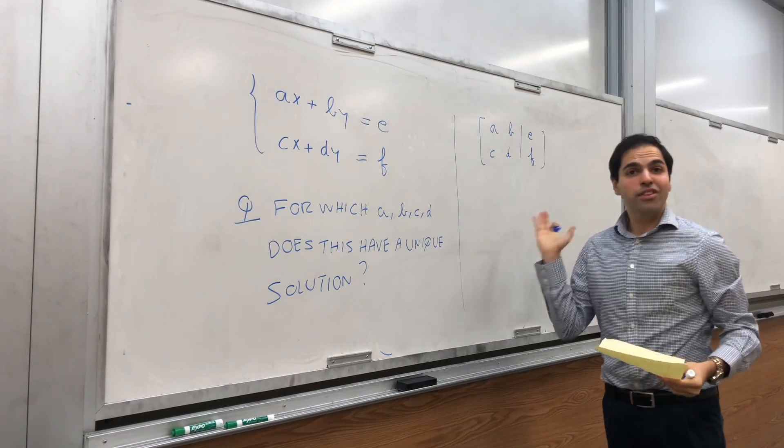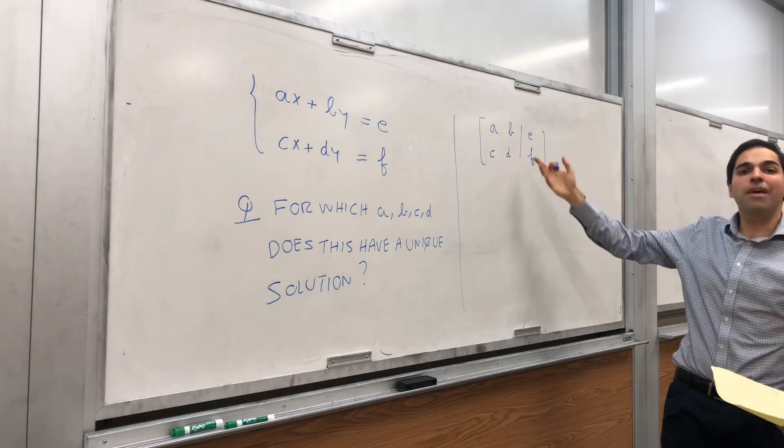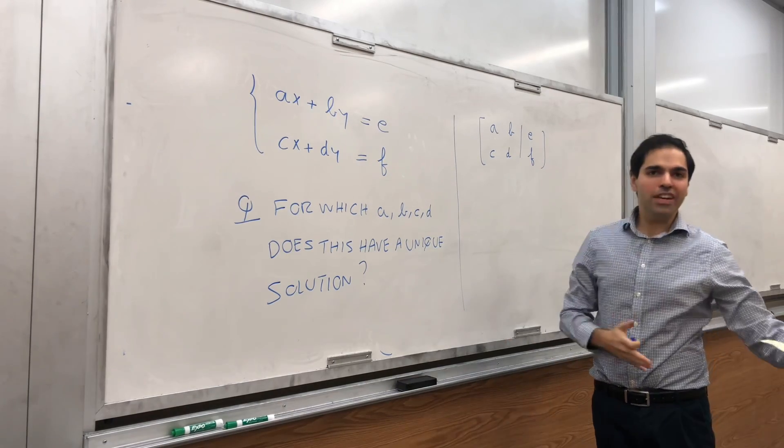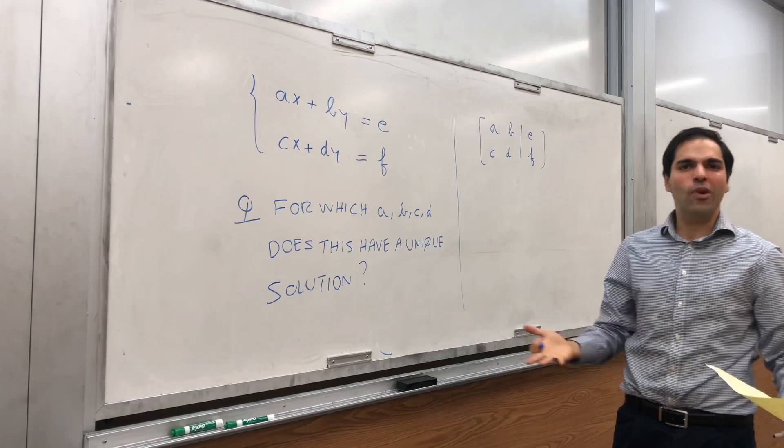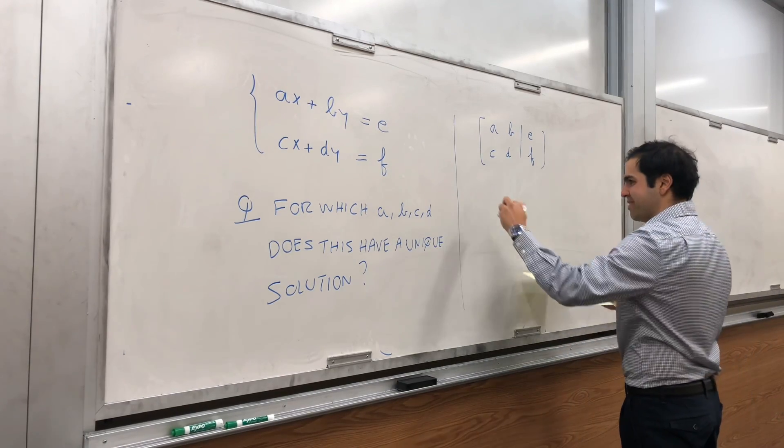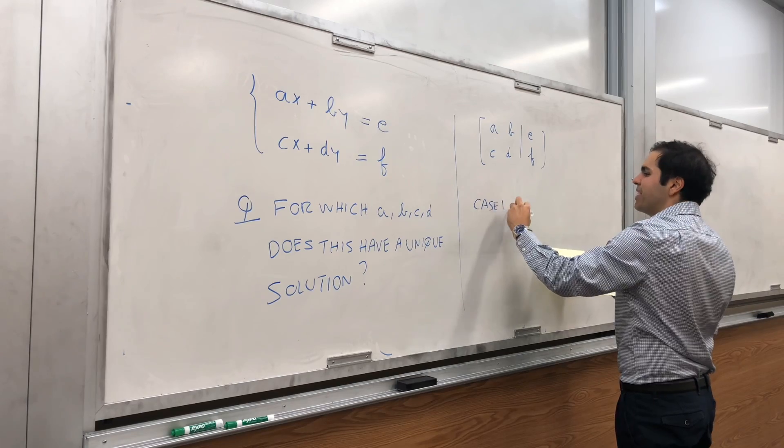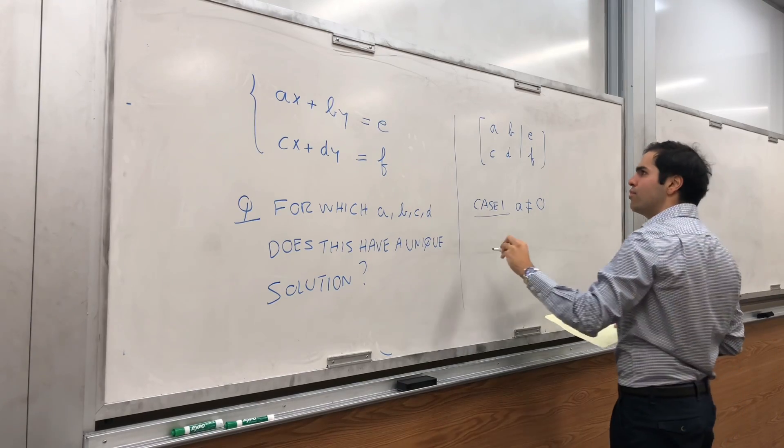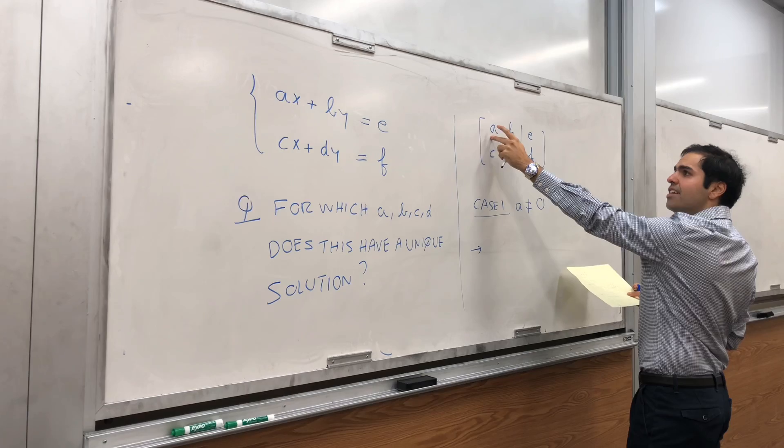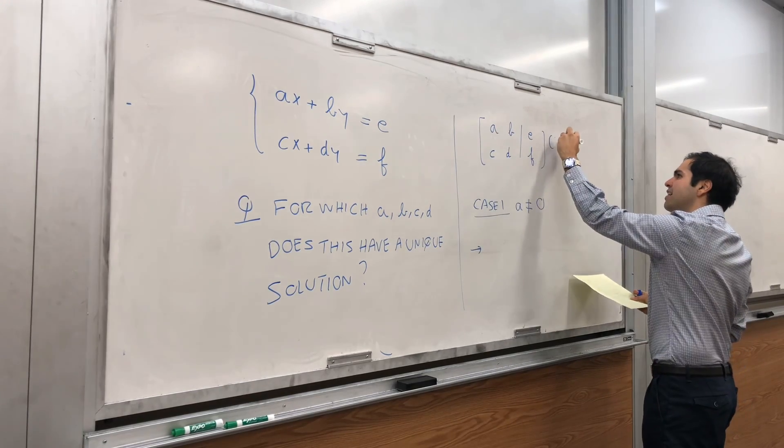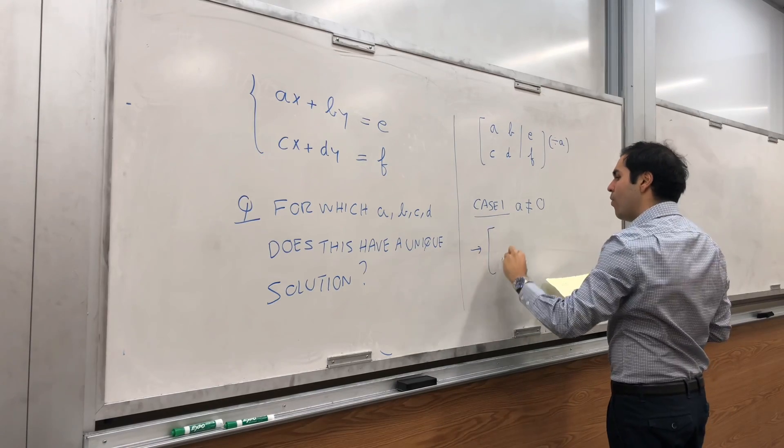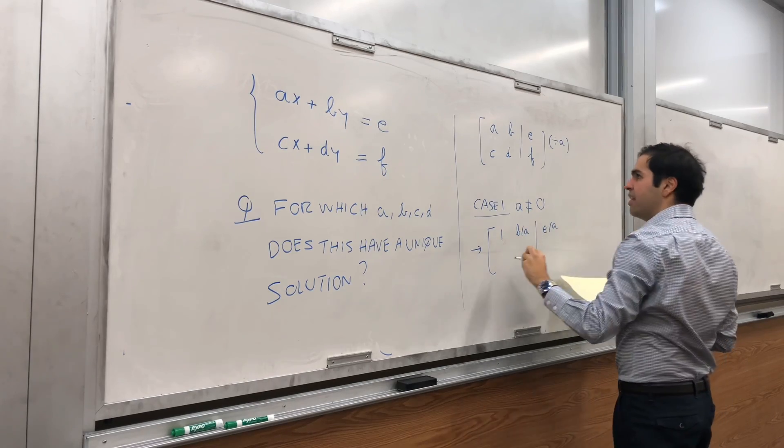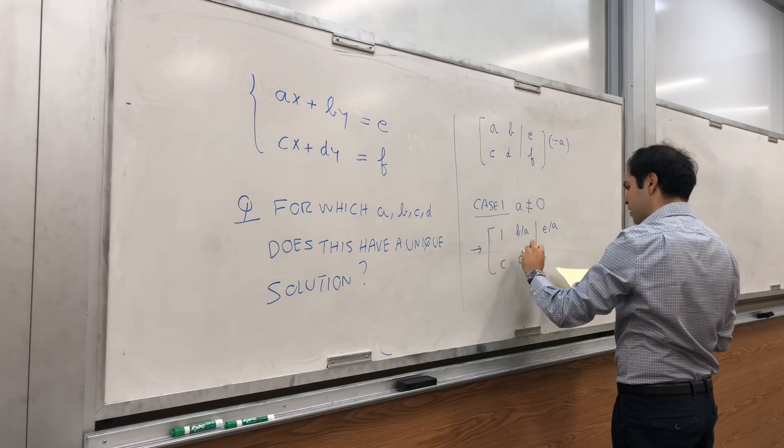All right, the first thing we would like to do, we would like to divide by A to do the row echelon form. But the problem is A might be zero. And because it depends on the case whether A is zero or not, let's argue in terms of cases. So case one, let's assume the happy case. A is actually non-zero. Then if A is non-zero, we can actually divide by A. So dividing by A, we get 1, B over A, and then E over A, and CD, and F.